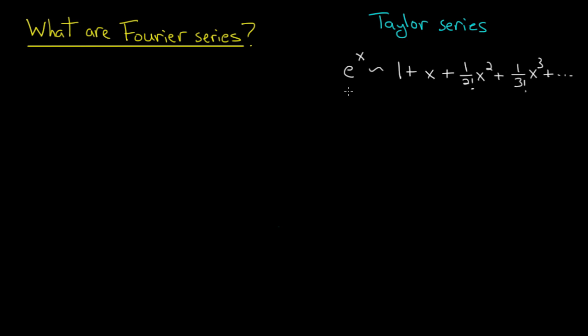Now the way to think of this is that we're taking a complicated function, e to the x, and we are representing it by a sum of less complicated functions: 1, x, x squared, x cubed.